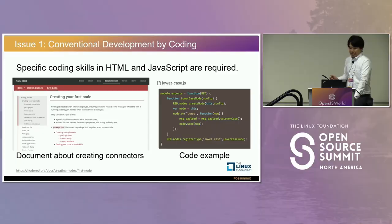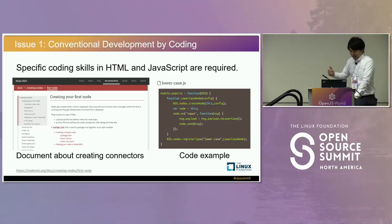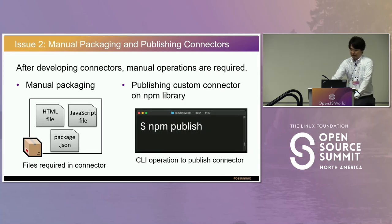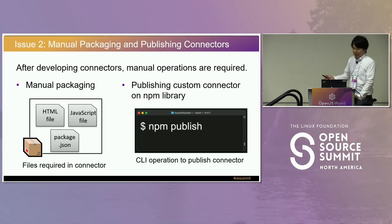If you want to develop an original custom connector using the conventional method, the official Node-RED documentation is a good source, with code examples on the website. But if you are not an IT engineer, it may be difficult because it requires specific coding skills — HTML and JavaScript. Additionally, after developing custom connectors, manual operations are required. To publish an NPM module to the NPM library, developers need to create a package.json file and execute the CLI command NPM publish. These operations may be difficult for factory engineers.